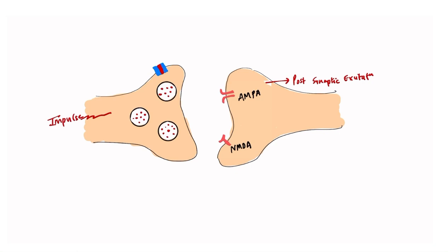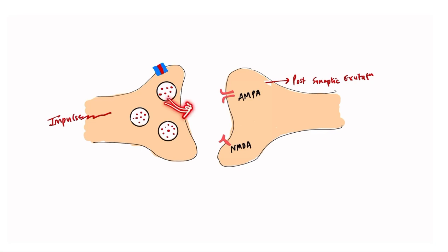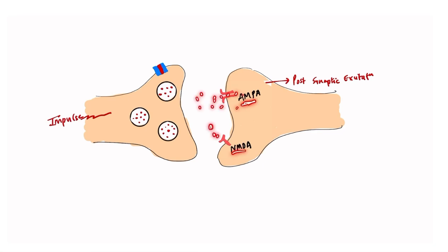What actually happens is whenever an impulse comes, it depolarizes the presynaptic neuron and opens the voltage-gated calcium channels. When calcium enters the presynaptic neurons, it triggers the release of neurotransmitters via vesicles into the synaptic cleft. These neurotransmitters then go and act on postsynaptic receptors like AMPA and NMDA.